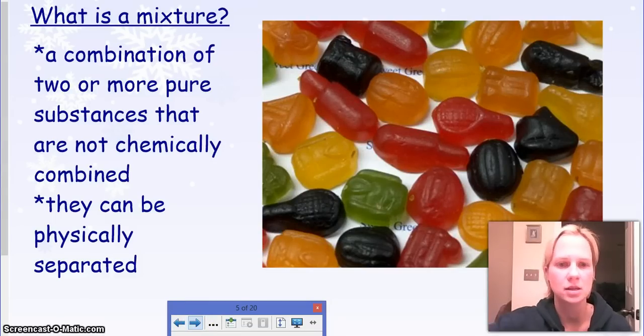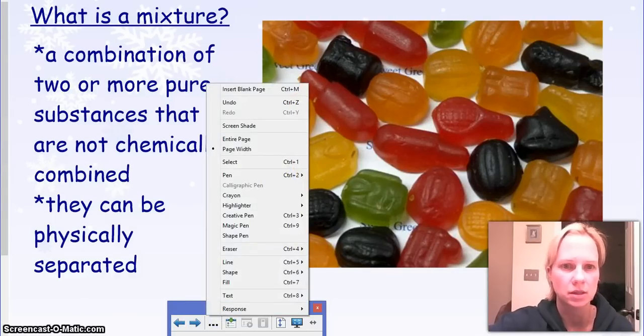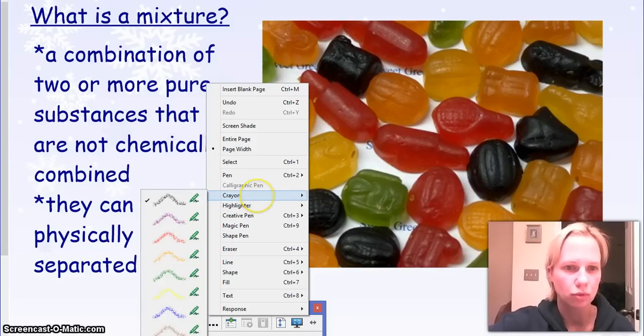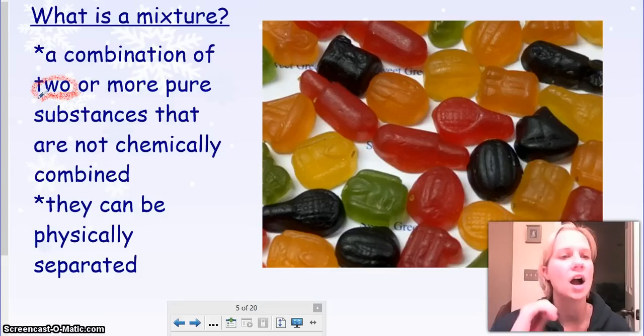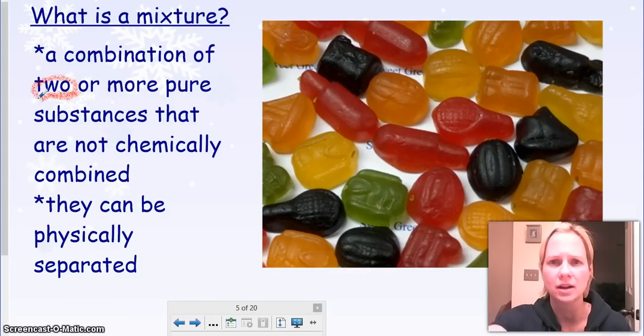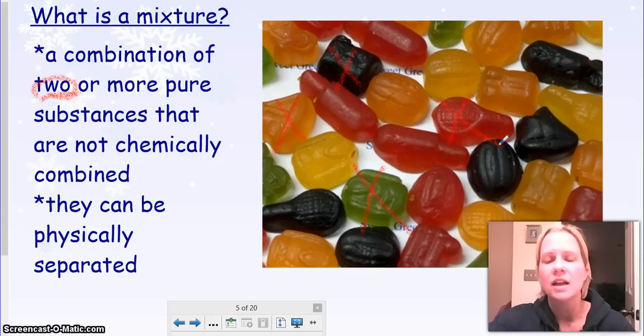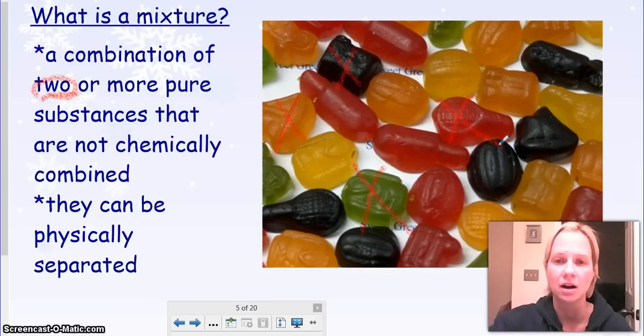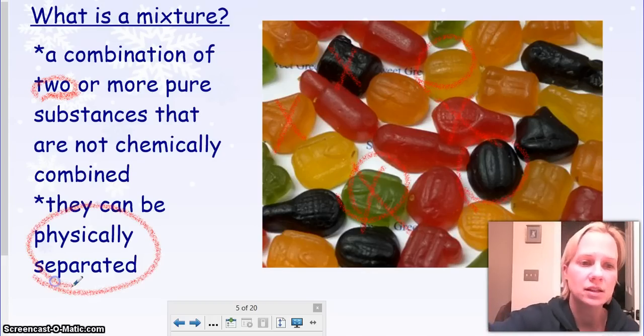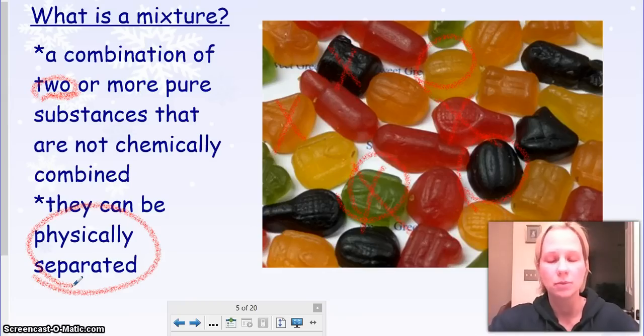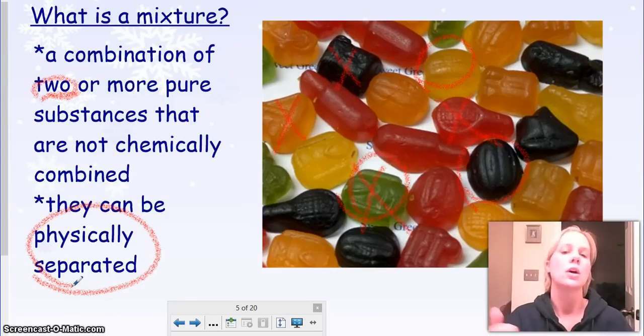Let's define a mixture and you can kind of see over here a picture of what a mixture looks like. A mixture is a combination of two or more pure substances that are not chemically combined. So we can see that there's definitely more than two things here. I have this purple thing, this orange thing, this green thing, this red thing. They're different and they're not chemically combined, which means I just kind of throw them in a bucket together and I can separate them out. They can be physically separated, they're not chemically bound to each other. That's a mixture.